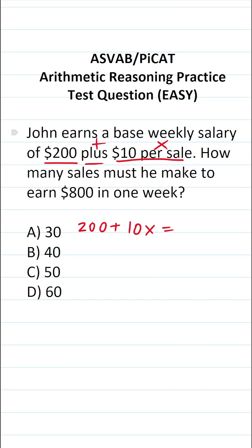And we want to know how many sales he must make to earn $800 in one week. So this is going to be equal to $800. So as it happens, all we have to do is solve this equation and we'll have our answer.